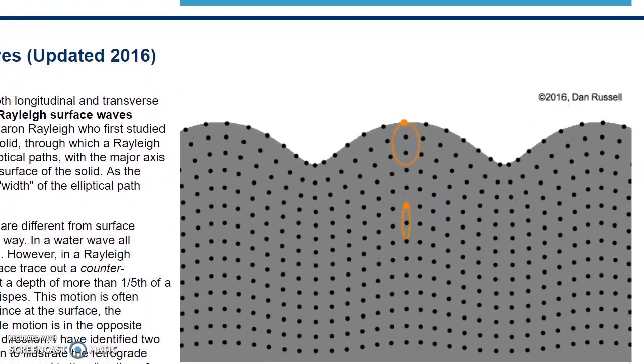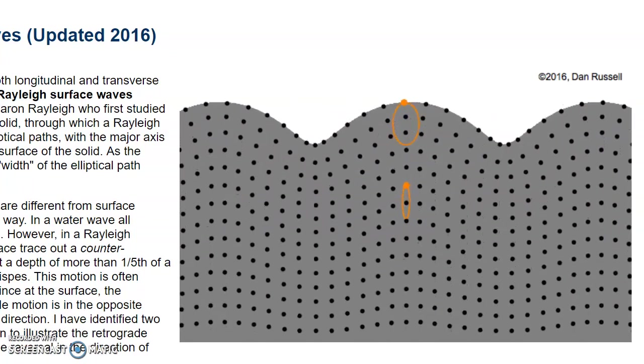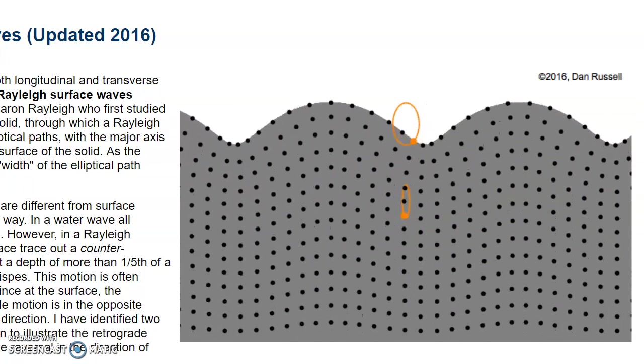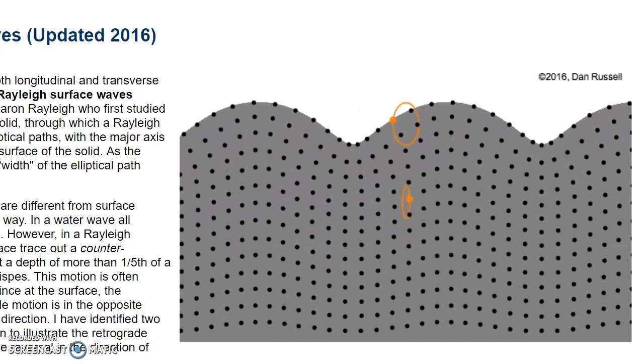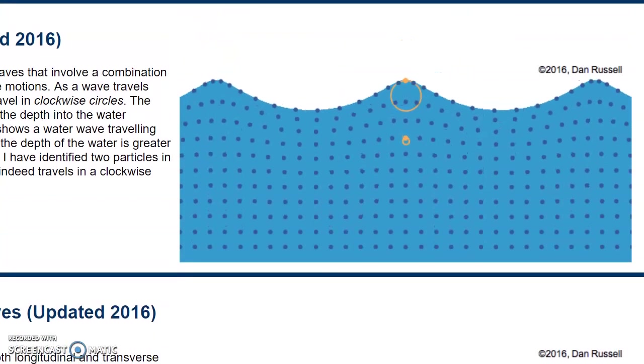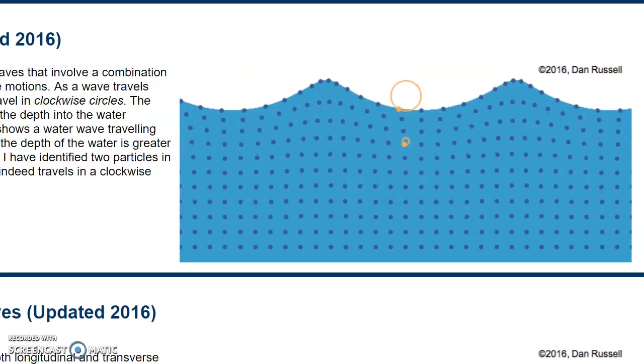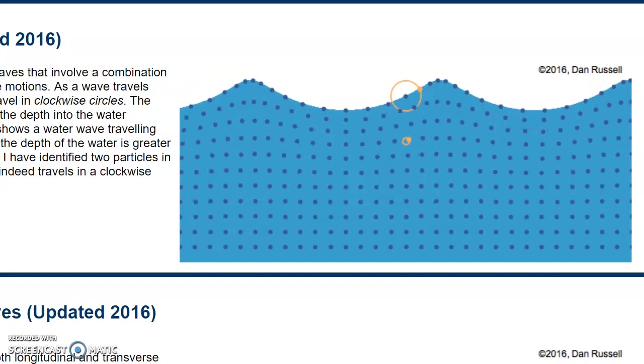And this is just kind of a neat thing to see. These are called Rayleigh surface waves, and they are things that move through solids, and here we have, at first glance, something that looks like the same thing we saw with the water wave. But if you saw the water wave, the two circles, even though they're different sizes, they are still moving in the same direction. Both of those are going clockwise.